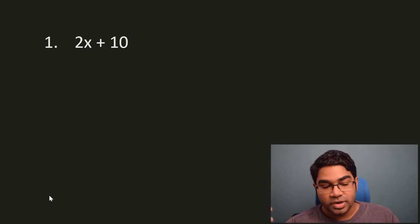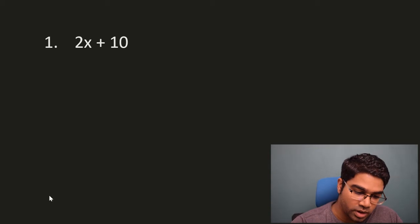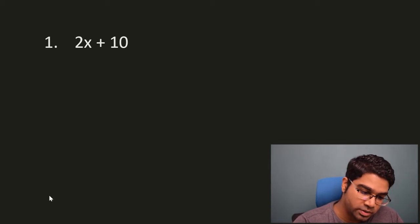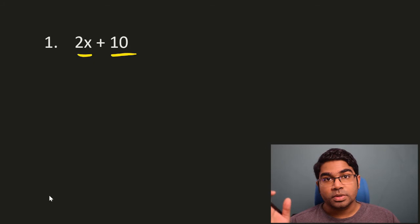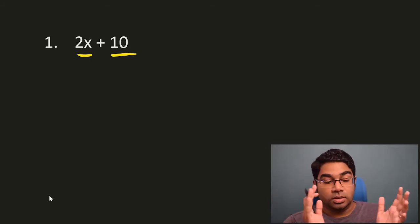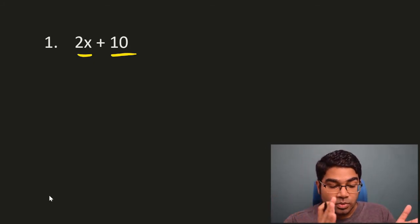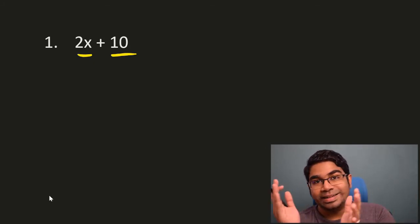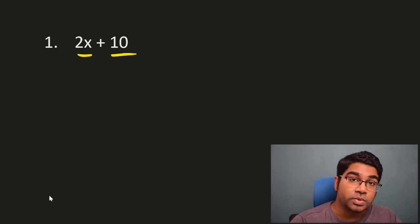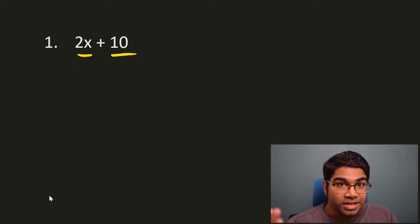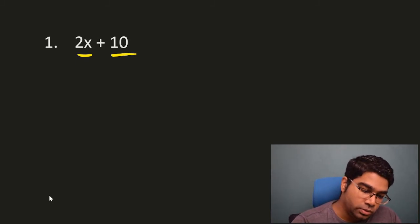When we look at this algebraic expression, you have two terms here: 2x and 10. The first step is to find the common factor. The common factor between 2x and 10 is 2, and we should take the highest common factor. 2 is the highest common factor between the two.